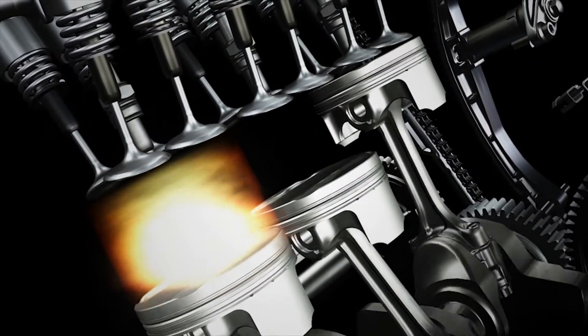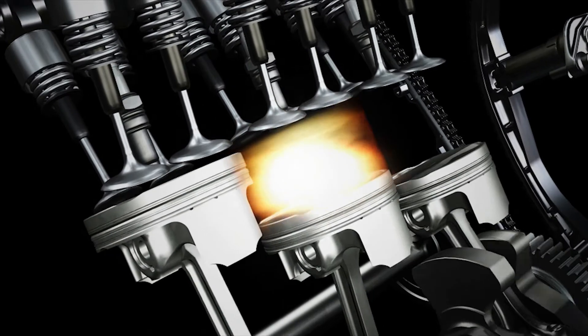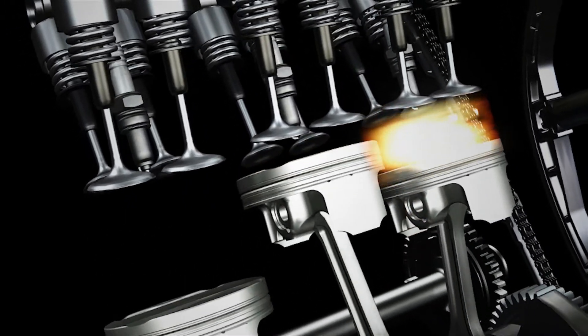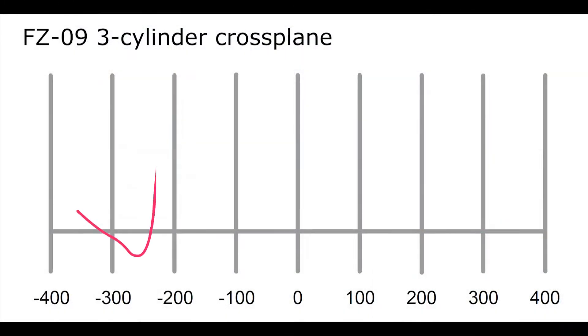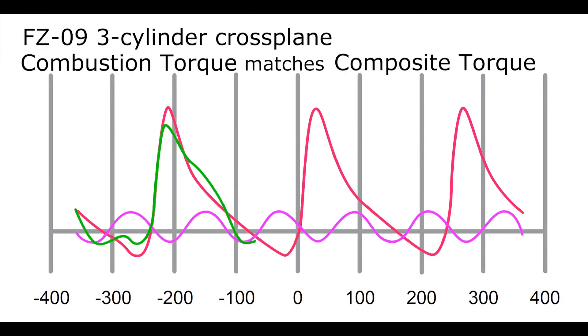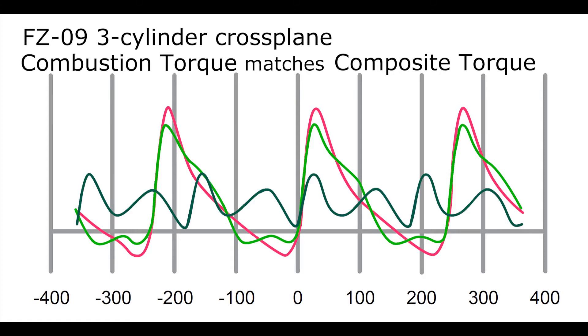The cross-plane concept also includes the three-cylinder 120-degree crankshaft in the new FZ09. As you can see, the combustion torque and the inertial torque combine to produce a tremendous amount of composite torque that is virtually identical to the combustion torque curve compared to the typical flat-plane crankshaft engine.